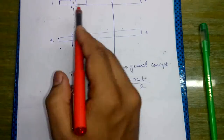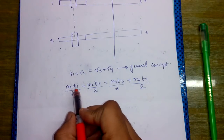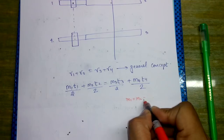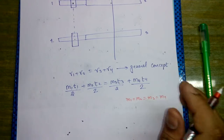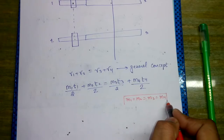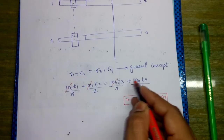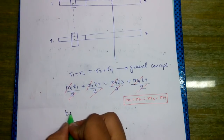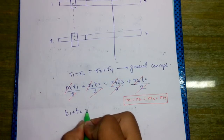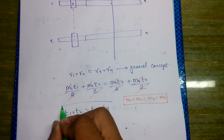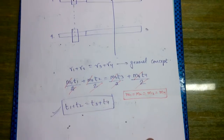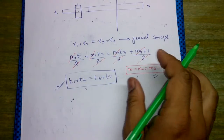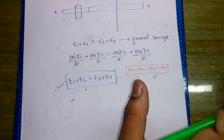Now, the module of gears 1 and 2 is the same. If m1 equals m2 equals m3 equals m4, the module cancels out and 2 also cancels. What we obtain is t1 plus t2 equals t3 plus t4. By this, we can find out the unknown number of teeth on any gear if asked. If all modules are the same, we use this relation; otherwise, we use the full expression accordingly.